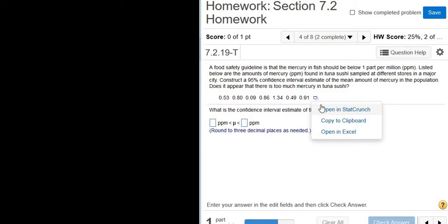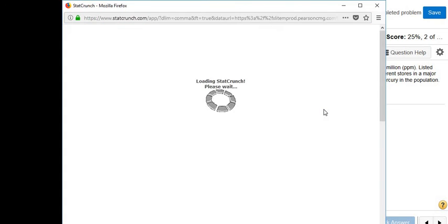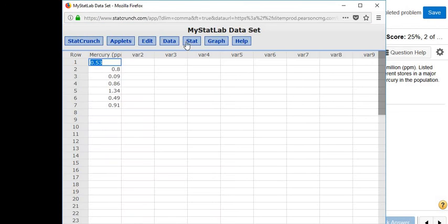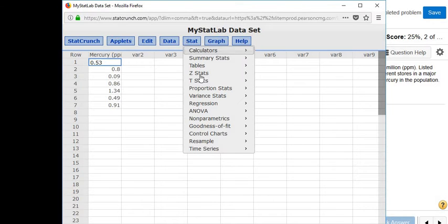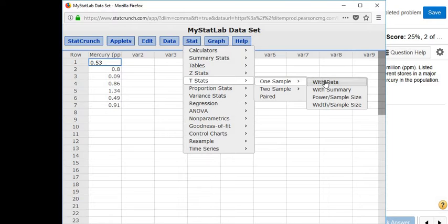So we click this little box here and we click open in StatCrunch. And then we go to stat, T, one sample, and we're going to use with data because we have all the actual data. If they give us the sample size and the sample mean and the standard deviation, then we use with summary. But they're just giving us the numbers so we use with data.